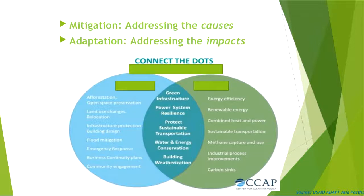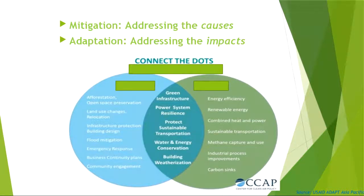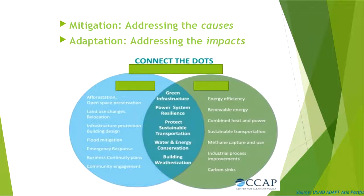There is significant overlap between adaptation and mitigation, and many activities could fall into both. Examples of adaptation include changing land use patterns, altering infrastructure and building design, flood mitigation, creating emergency response plans, and changing from a concrete or asphalt surface to interlocking bricks to allow water to seep back into the ground, or building a seawall.